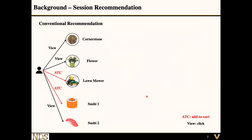Conventional recommendation typically works by giving previously interacted items and trying to predict what the next items this user might want to interact with. For example, a user interacts with five items, but among these five items there appear to be two conflicting interests. One interest is for decorating the garden — the user clicked the cornerstone, the flower, and added the lawnmower. While the last two items are food-related. So if we fuse all of these interests together to make the recommendation, that cannot be good.